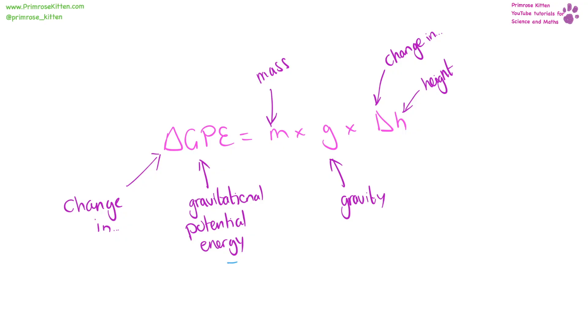If we want to work out the change in gravitational potential energy, that is equal to mass times gravity times change in height. Gravitational potential energy is measured in joules, mass is measured in kilograms, gravity is 10 newtons per kilogram, and height is measured in meters.